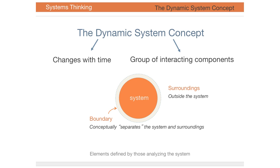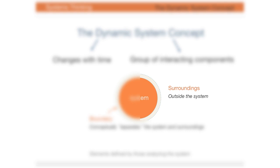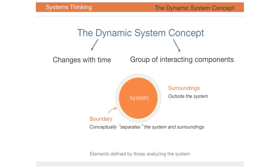The surroundings refers to everything outside of the system. The system is a concept that represents a group of interacting components, and the language that we use is that we have a boundary which differentiates between the system and the surroundings.